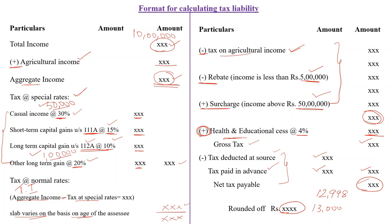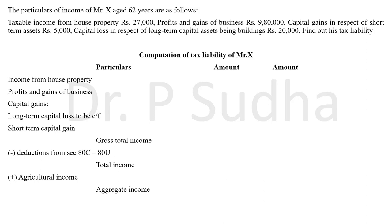In this video, the focus is on how to calculate tax at normal rate, tax at special rate, rebate, tax on agricultural income, and tax deducted at source — these are being uploaded as separate videos. Now let's move on to the problems. The first question: the particulars of income of Mr. X aged 62 years are — taxable income from house property, profit and gains of business, capital gain on a short-term asset, and capital loss on a long-term capital asset. We have to find his tax liability.